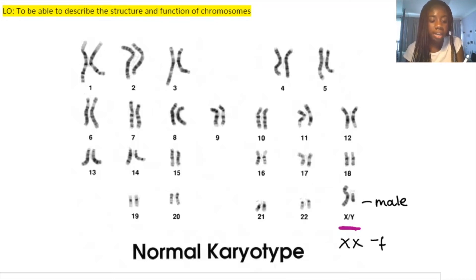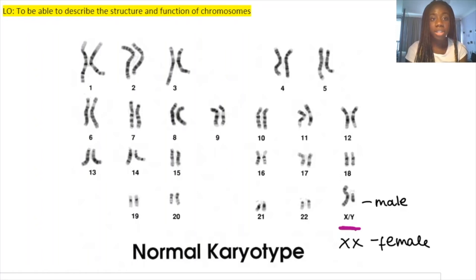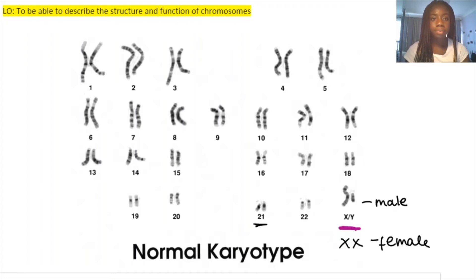Having a different number of chromosomes can indicate a genetic disease. A common example is Down syndrome, which occurs when you have three copies of chromosome 21.